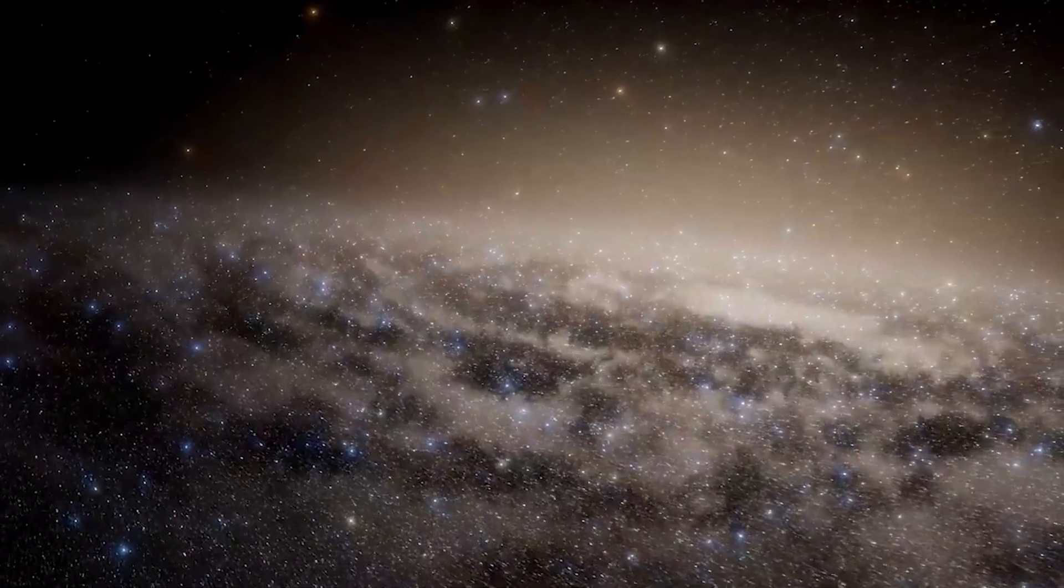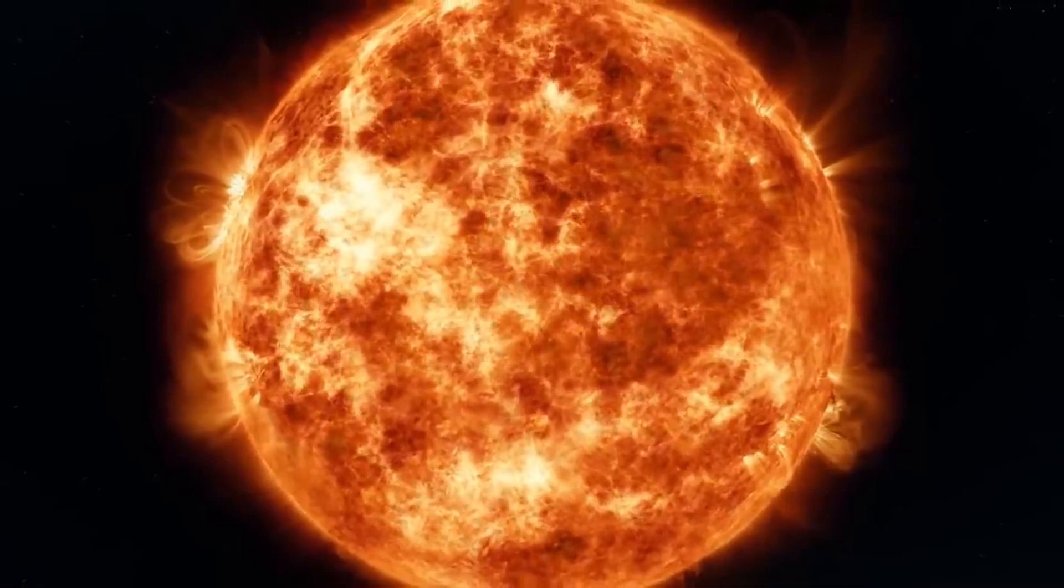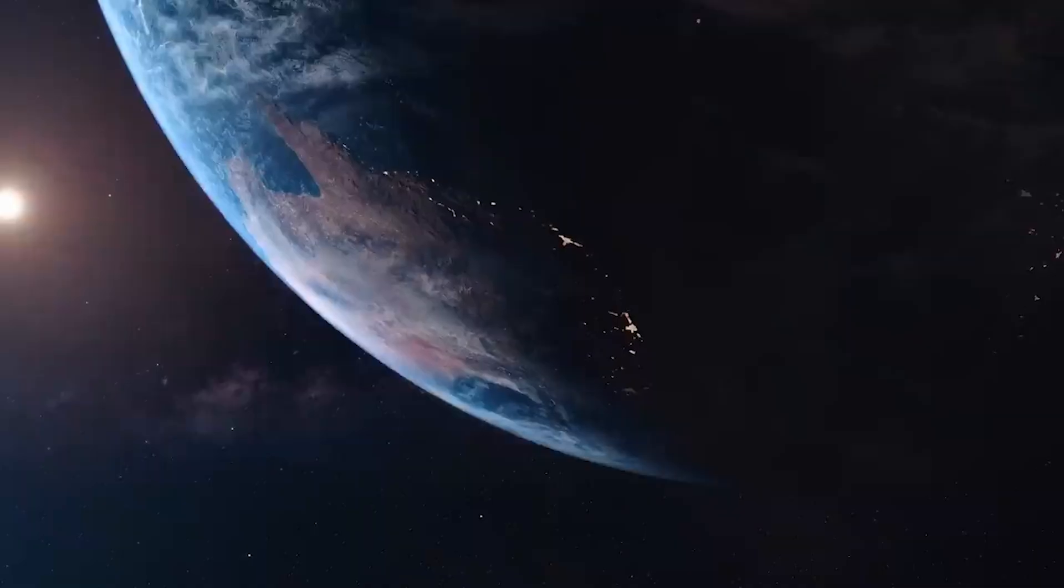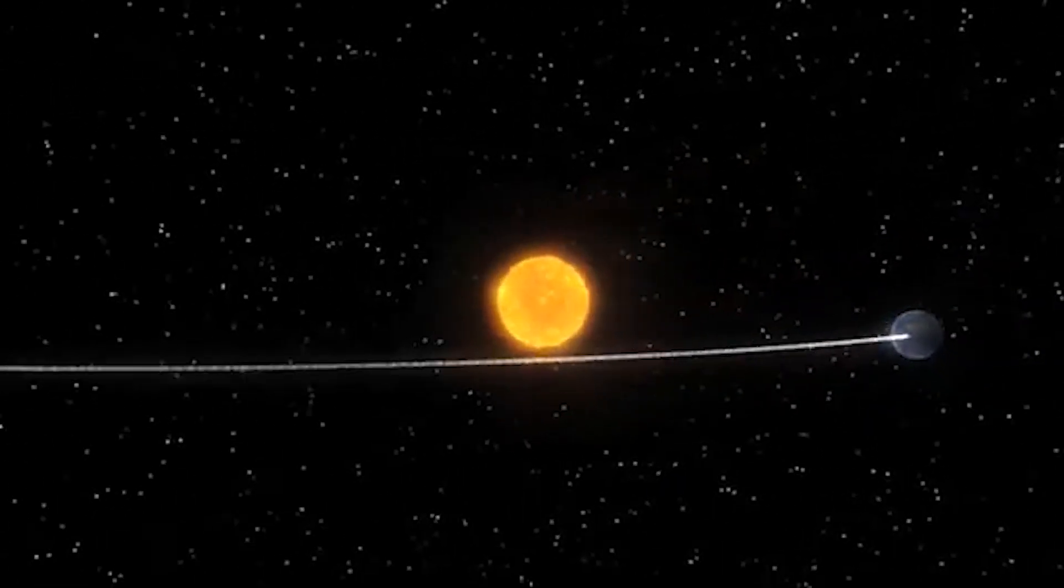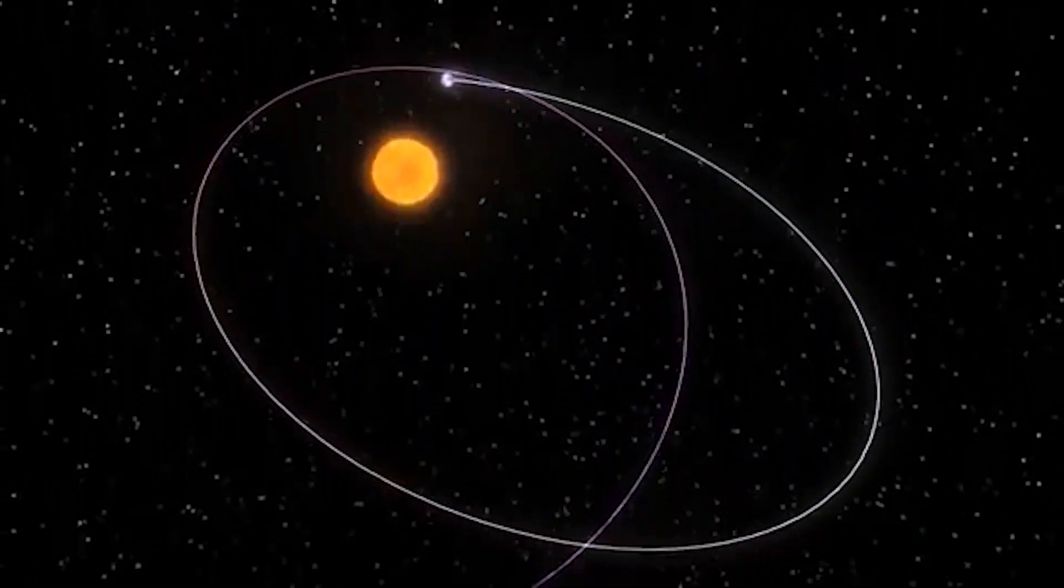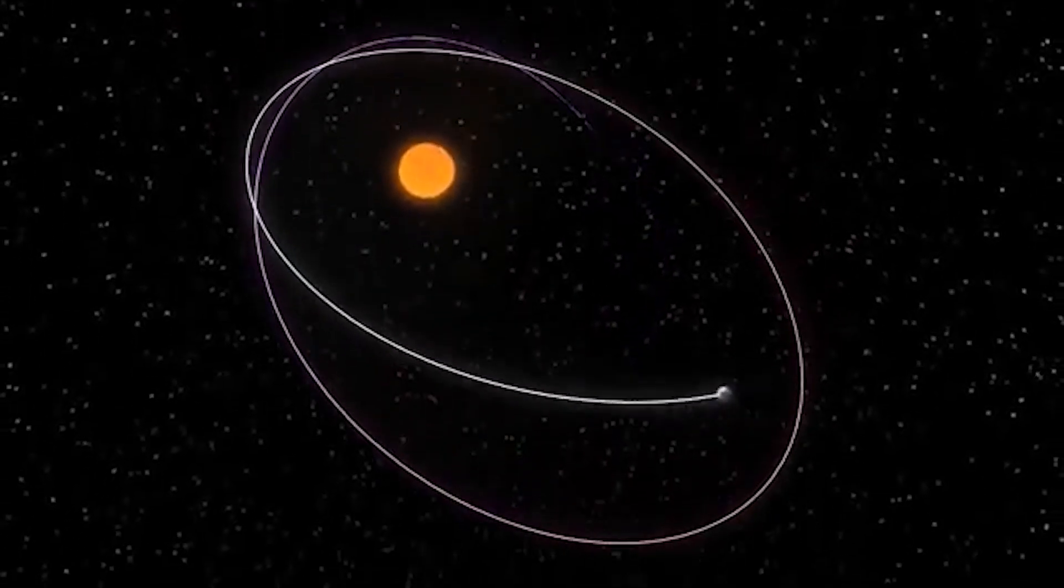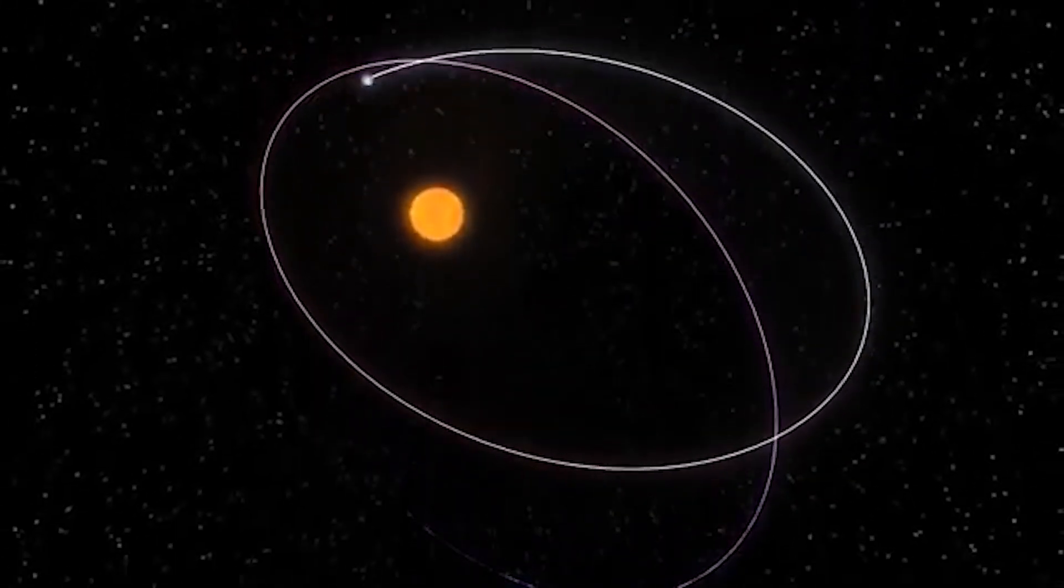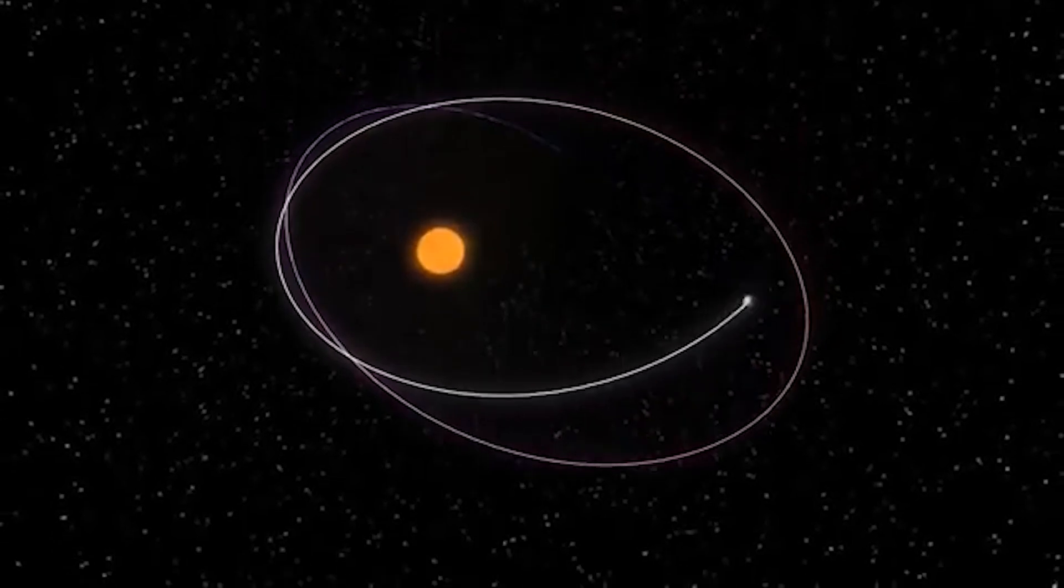Kepler's Third Law, the Law of Harmonies, establishes a mathematical relationship between a planet's orbital period and its average distance from the sun. The square of the planet's orbital period is proportional to the cube of its average distance from the sun. In simpler terms, the farther a planet is from the sun, the longer it takes to orbit it.